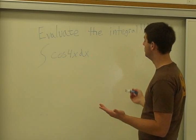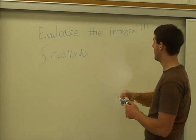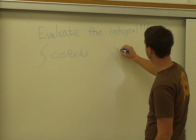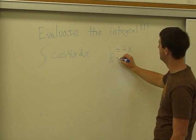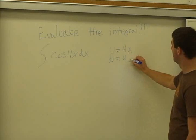What we're going to do is use a u substitution. Our 4x here is the best candidate, so we're going to use u equals 4x. The derivative of that is du equals 4 dx.